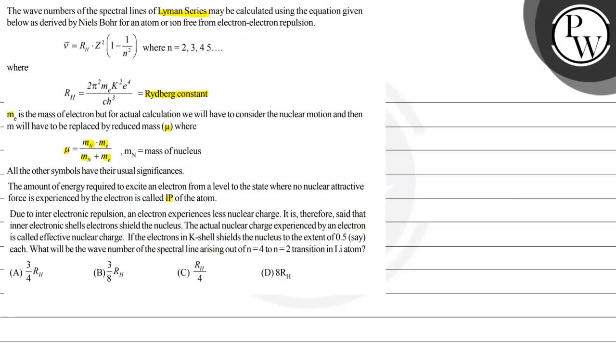Where IP is ionization potential. Due to inter-electronic repulsion, an electron experiences less nuclear charge. It is therefore said that inner electrons shield the nucleus. The actual nuclear charge experienced by an electron is called effective nuclear charge. If the electrons in K shell shields the nucleus to the extent of 0.5 each, what will be the wave number of the spectral line arising out of n equals 4 to n equals 2 transition in lithium atom?